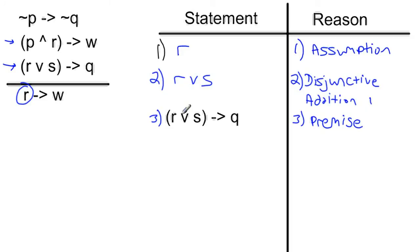Now, once I have these two statements from lines 2 and 3, R or S and R or S implies Q, now I could say that Q is true. This comes from modus ponens lines 2 and 3. So if this is true, then this is true, then this is true.